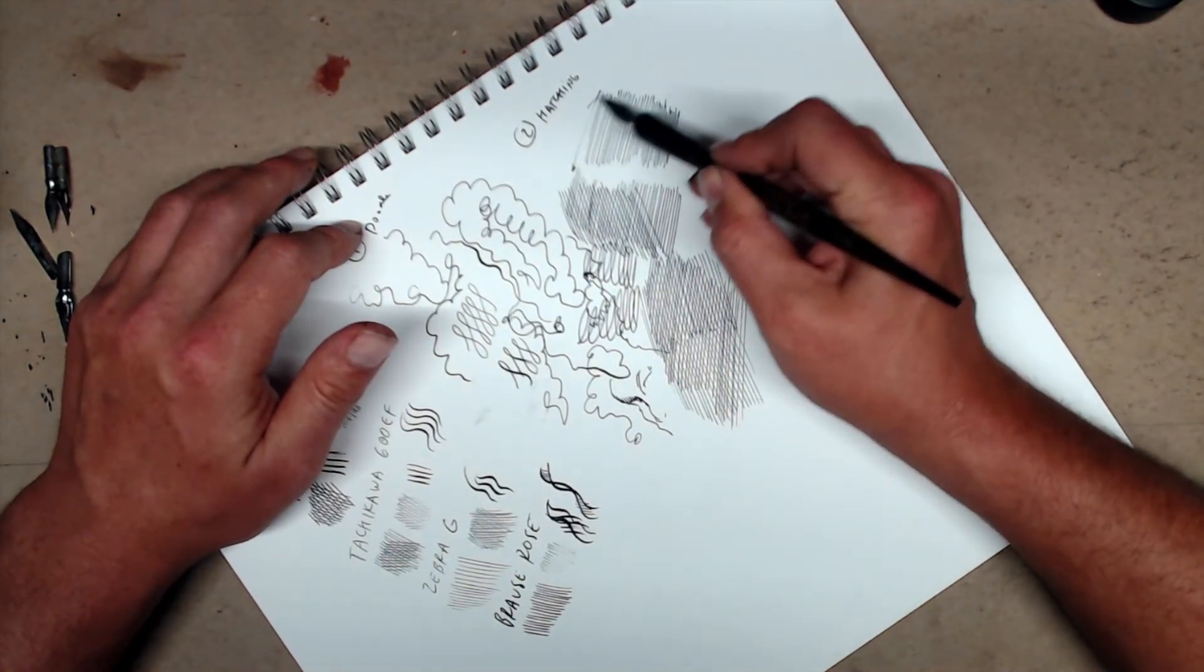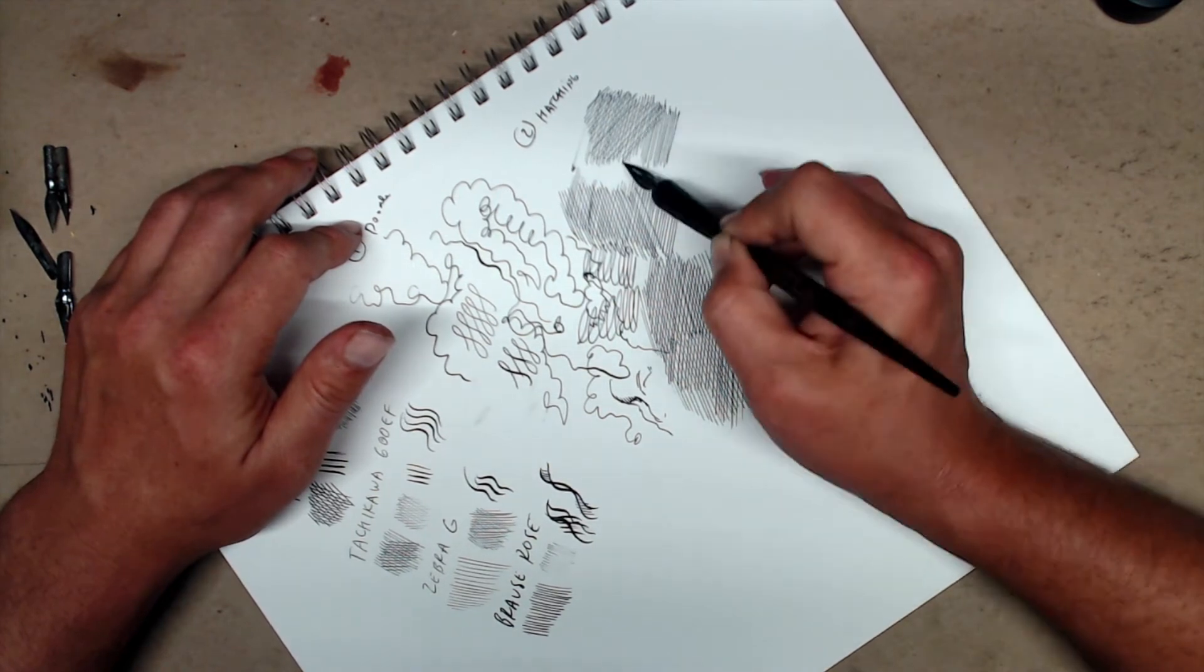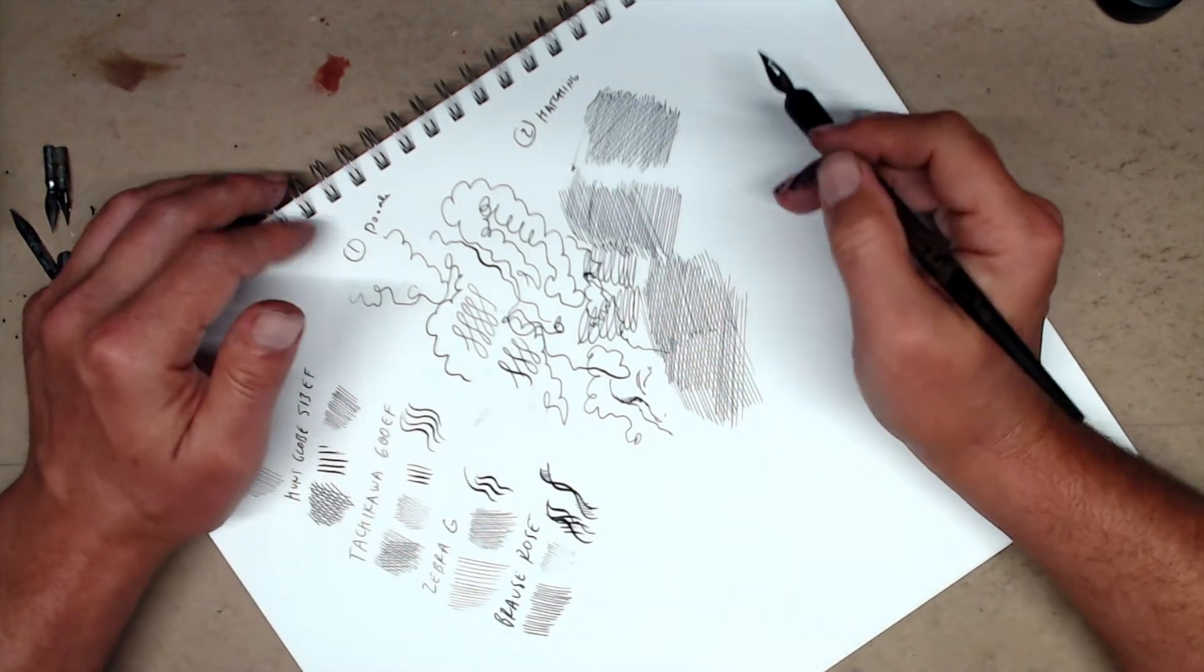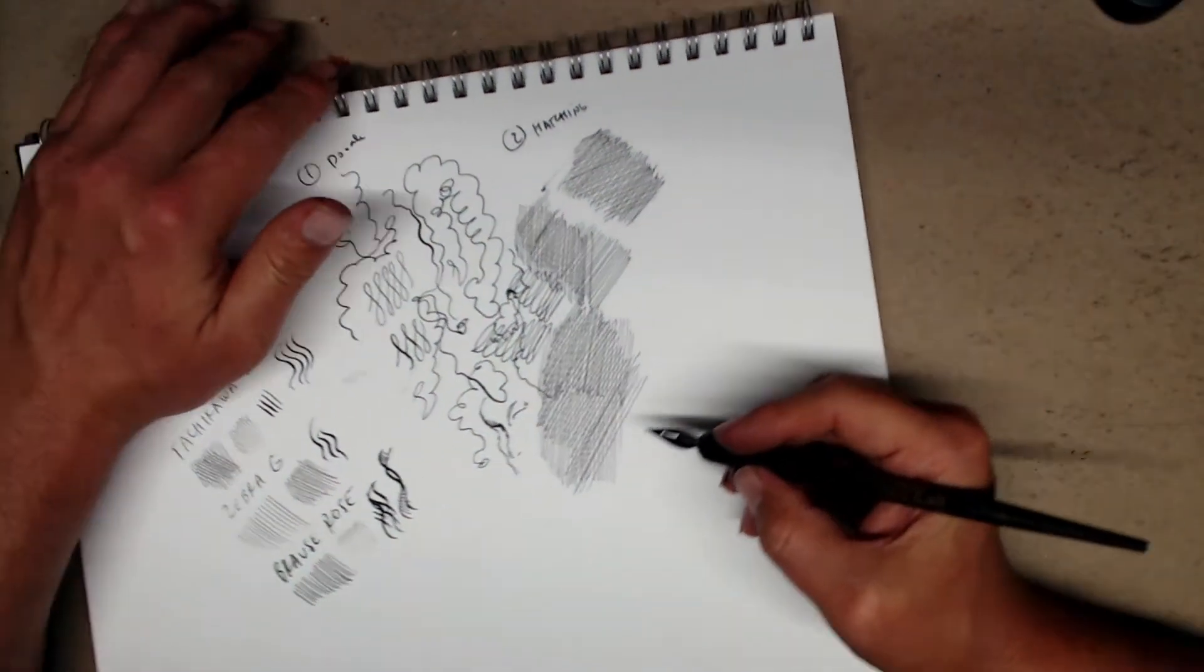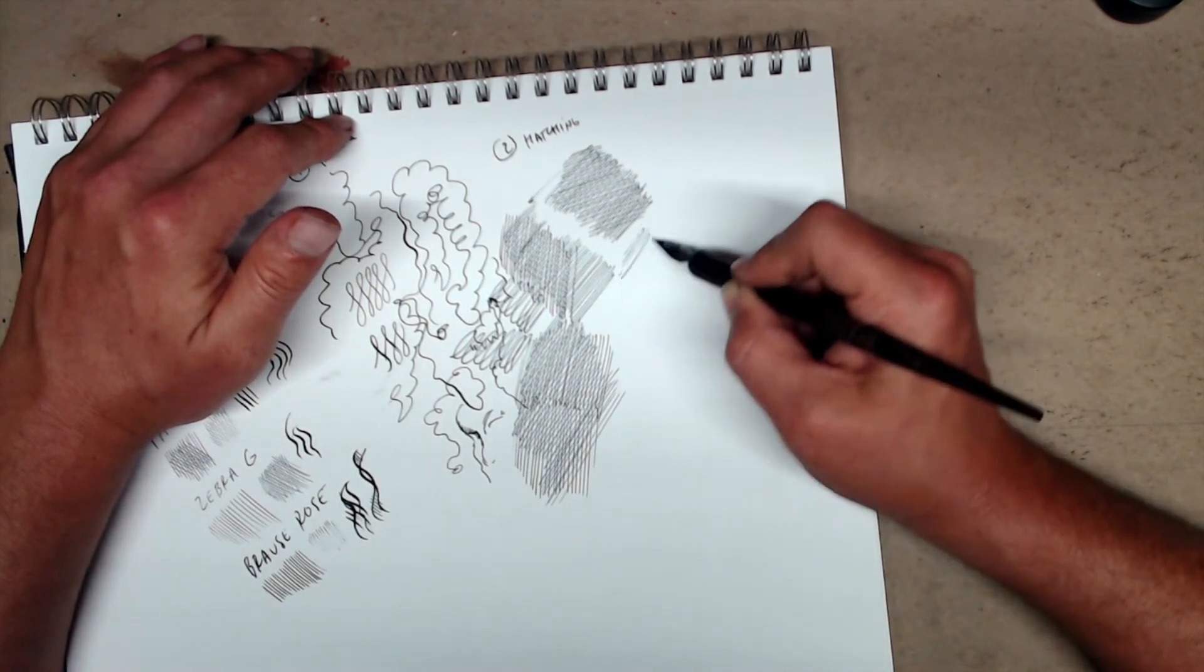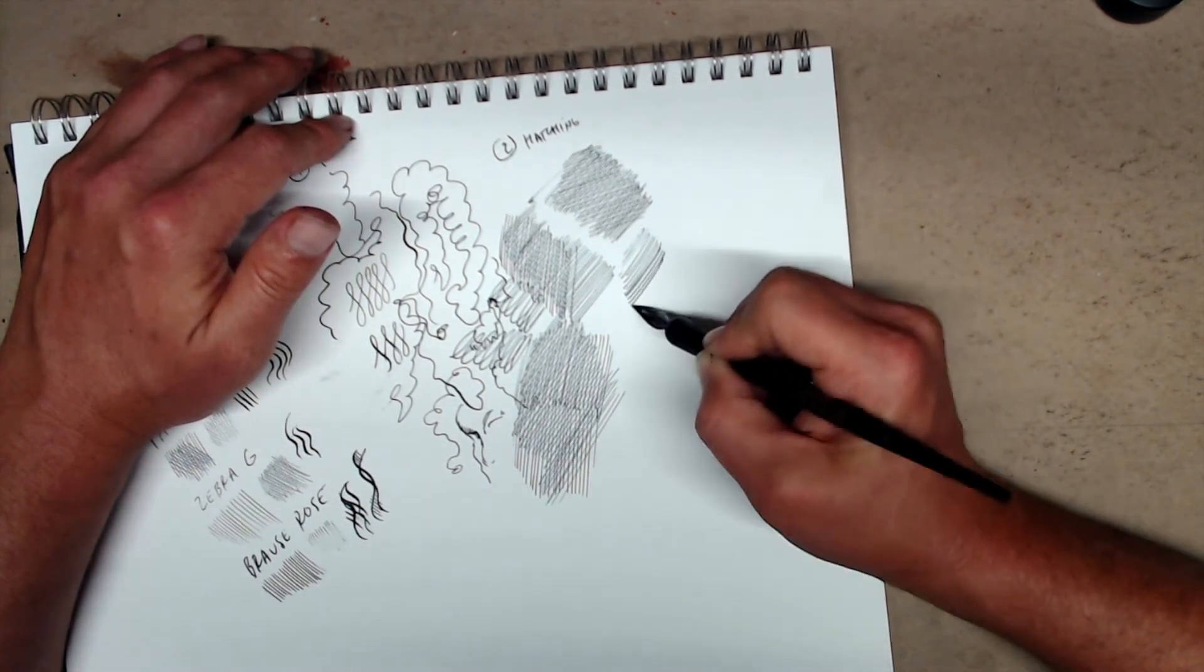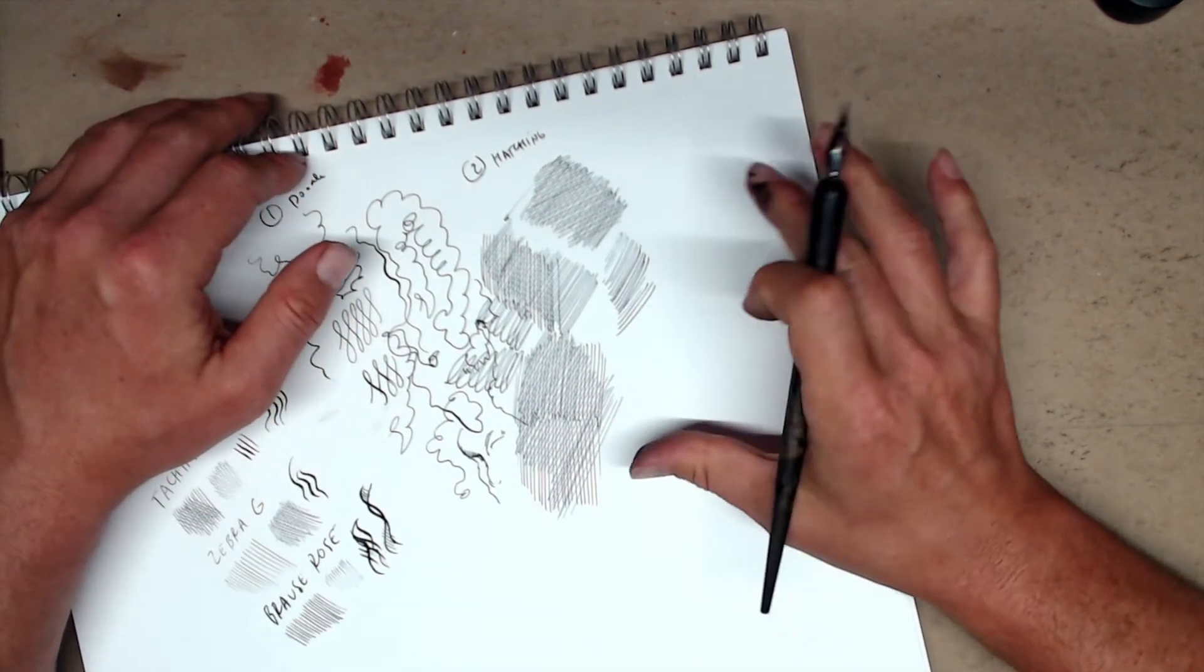Number two, sometimes you want your hatching to be straight. But sometimes you want it to curve around the form you're trying to draw. Elbow hatching is not particularly good for it. So I might be able to pull off a little bit of curvature with an elbow hatch. But mostly it tends to run straight.